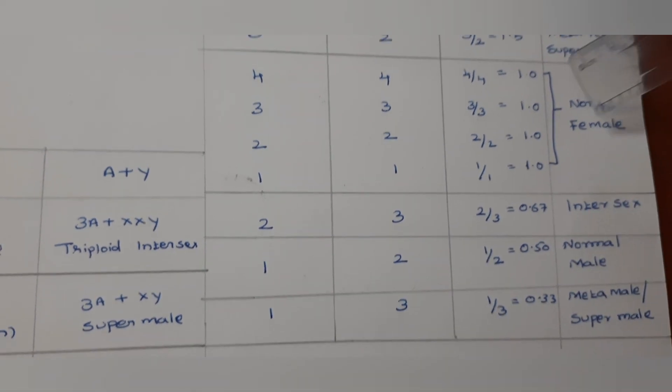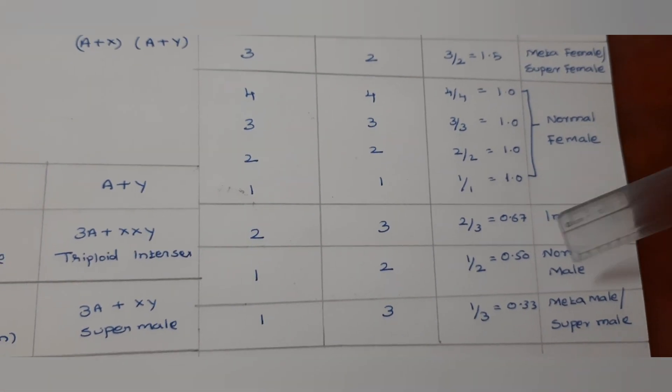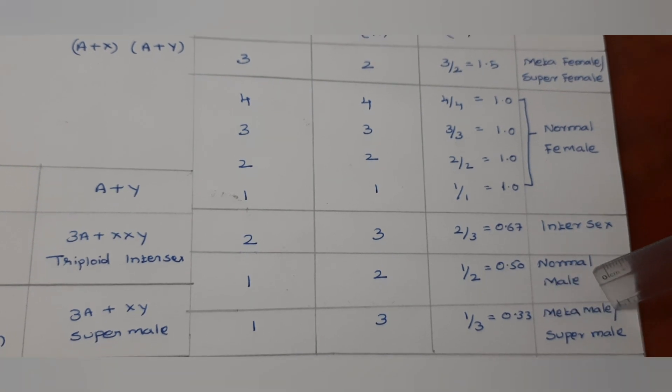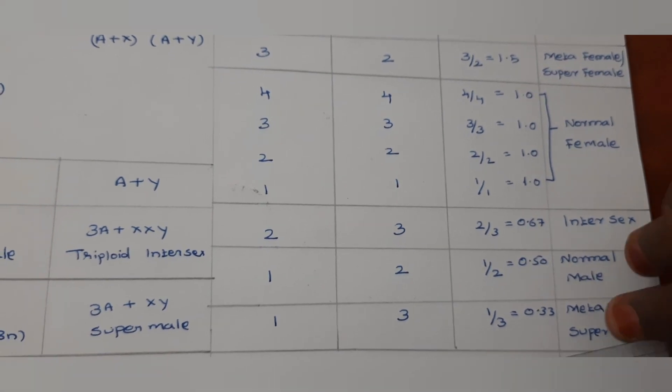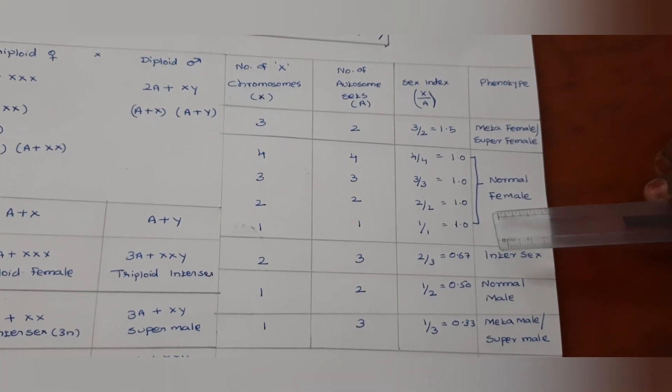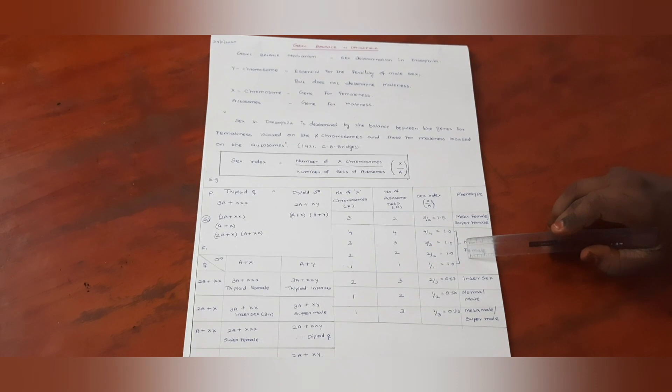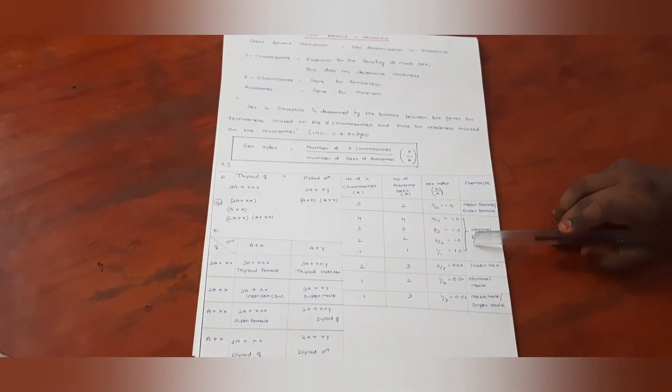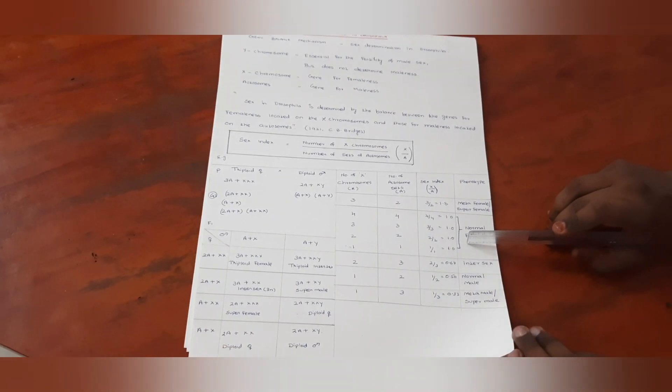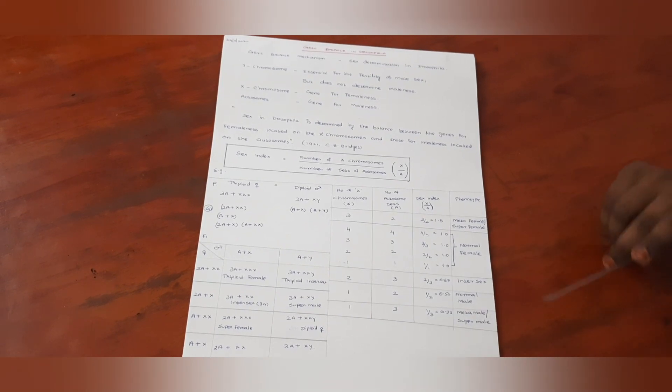So metafemale, normal female, intersex, normal male, super male. All these are the genic balance mechanism on the chromosome to determine the sex in Drosophila. It is also applicable to human, as in the case of transgender. So tomorrow we will come with dosage compensation and other interesting topics. I hope you understood. Thank you.